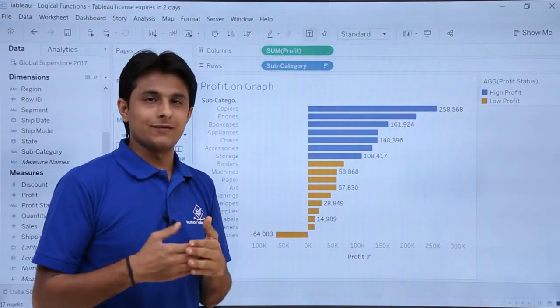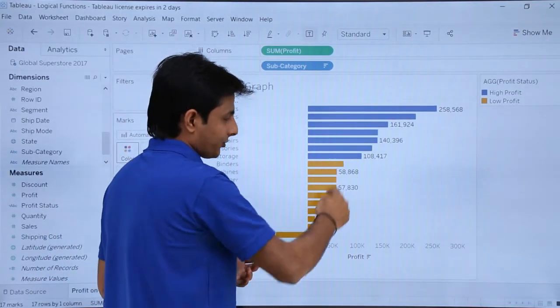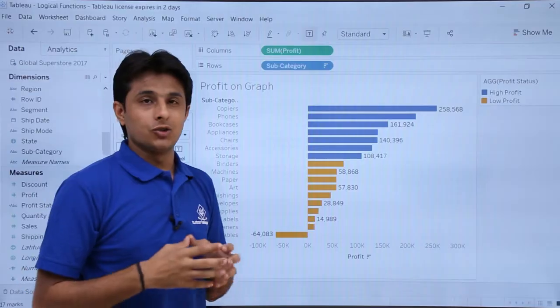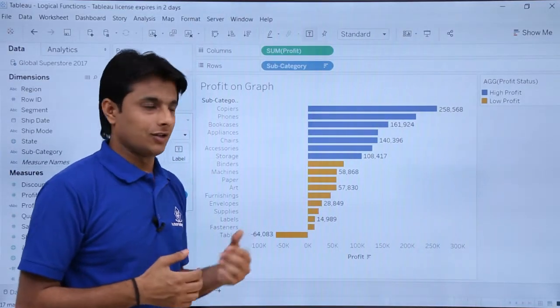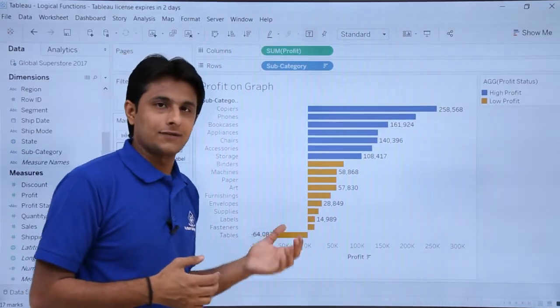Any value which is about 75,000 will be as high profit. Any value which is less will be as low profit. So this way you can use if-else condition to put a highlighting your graph chart itself.